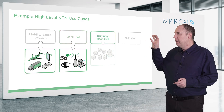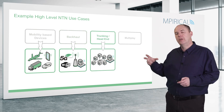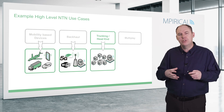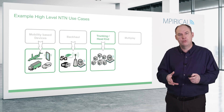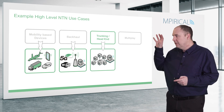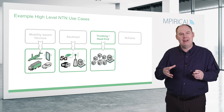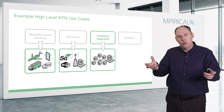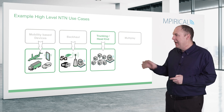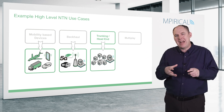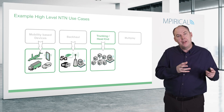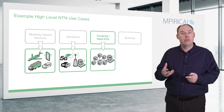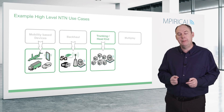Similar to backhaul, we can use the term trunking or head-end, which is more of an aggregation of lots of endpoints going through a central location. For example, you might have a lot of connectivity in a village, all physically connected, and they all go through this aggregation point — this head-end — utilising it as a mechanism to get that information back through the satellite system to where it needs to be.